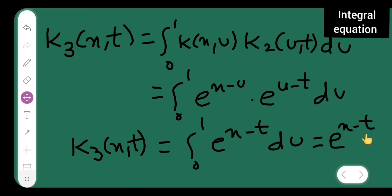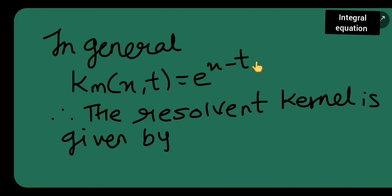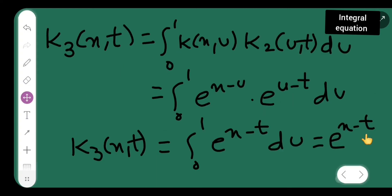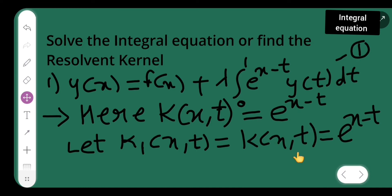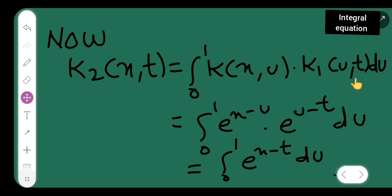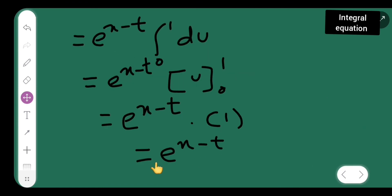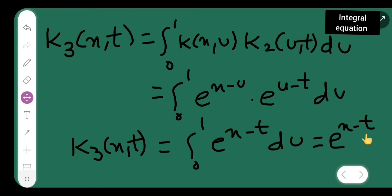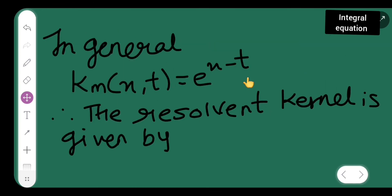In general, km(x,t) = e^(x−t) for all m, because k₁, k₂, and k₃ all give the same result e^(x−t).